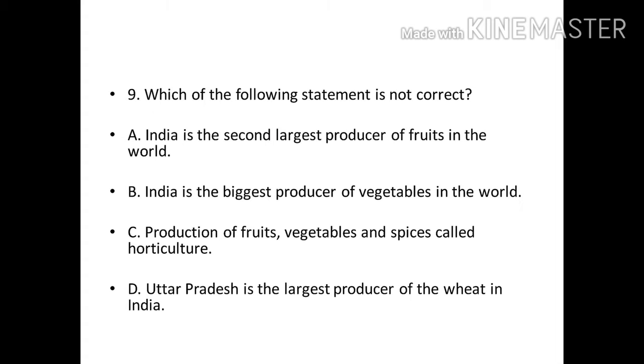Which of the following statement is not correct? Options: India is the second largest producer of fruits in the world. India is the biggest producer of vegetables in the world. Production of fruits, vegetables, and spices called horticulture. Uttar Pradesh is the largest producer of wheat in India. Correct answer: Option B, India is the biggest producer of vegetables in the world.